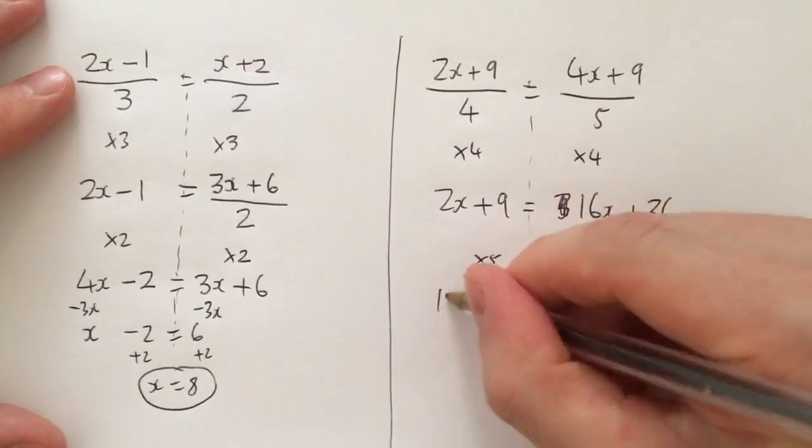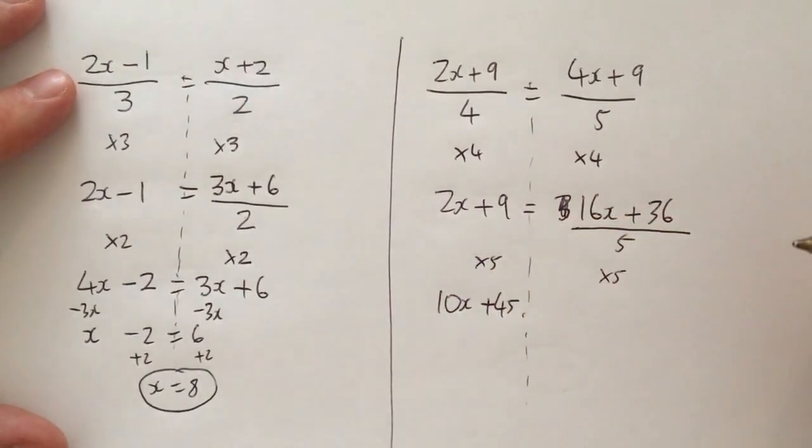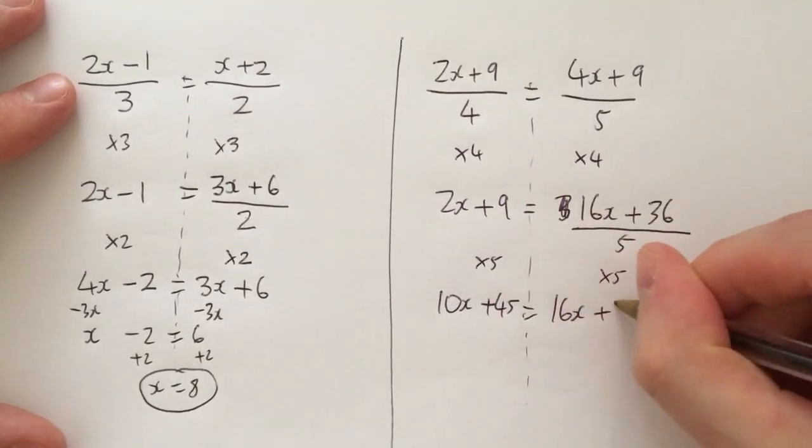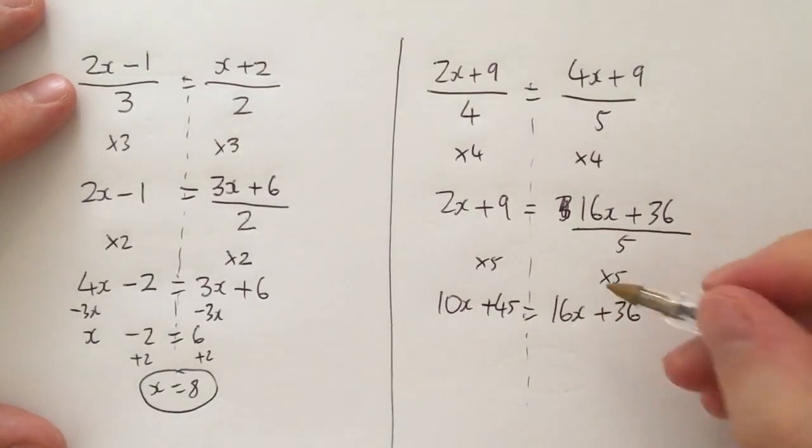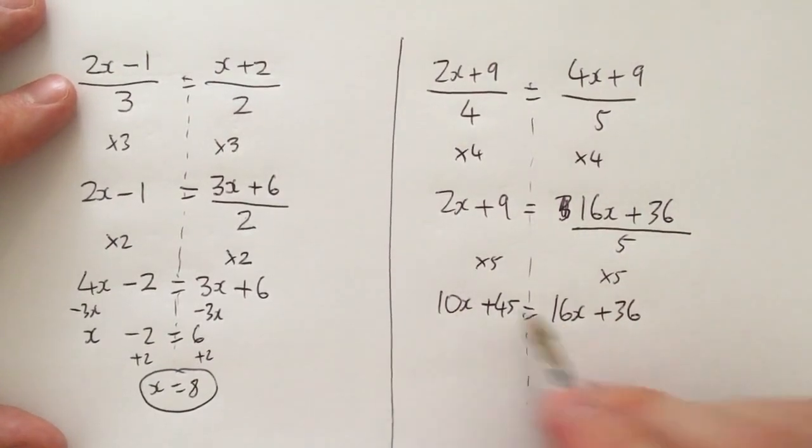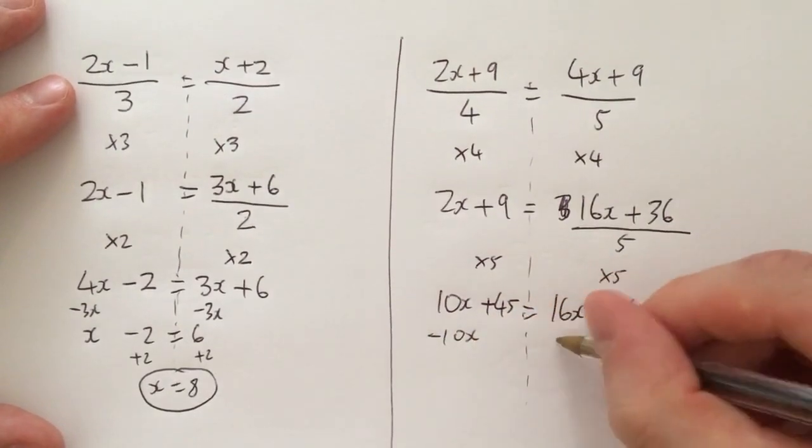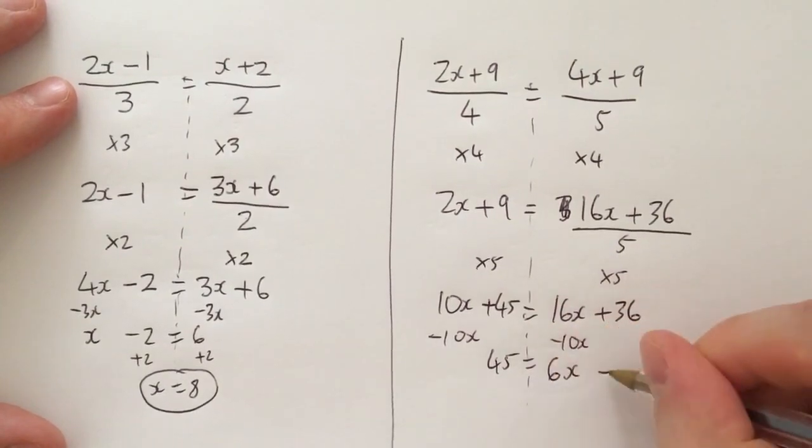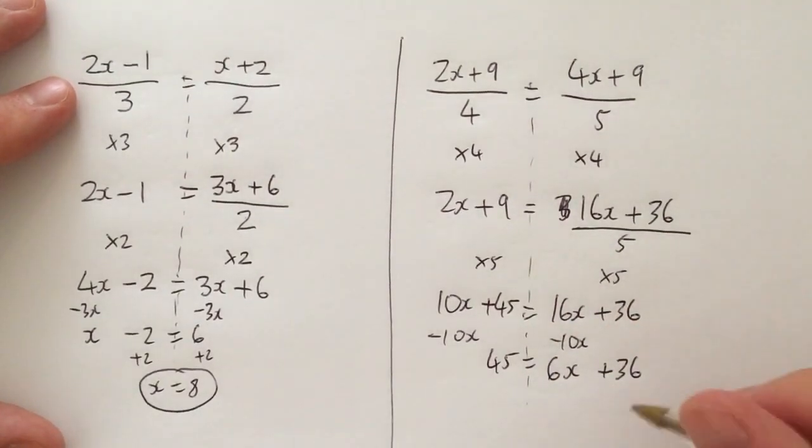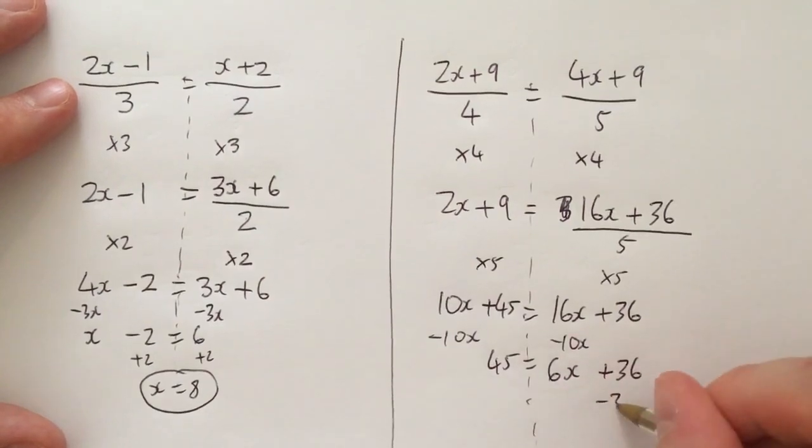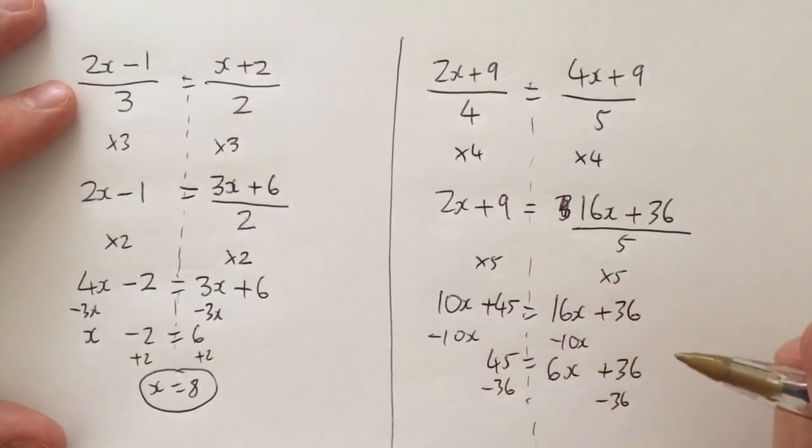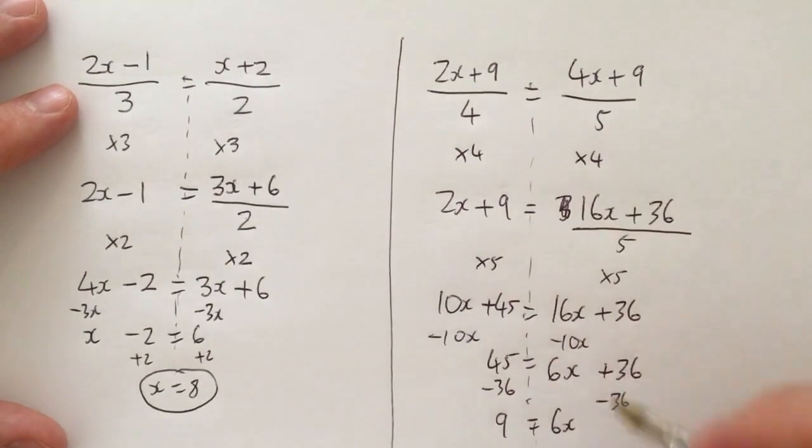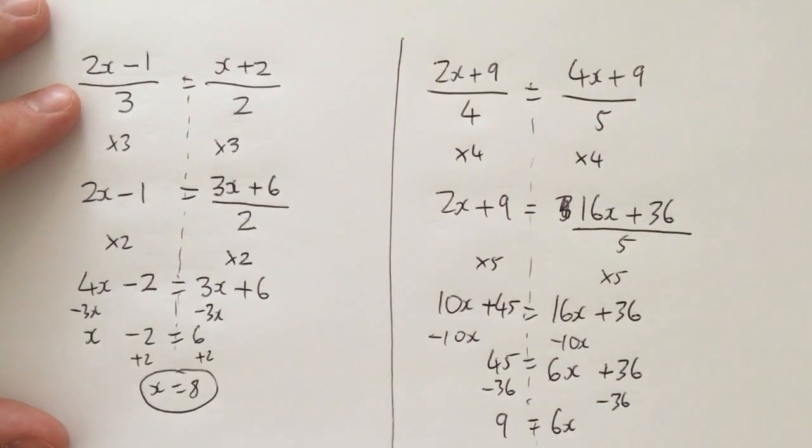That would be 10x plus 45 equals, divide by 5 times by 5 cancels out, 16x plus 36. Okay, then I just solve the equation, which the smaller coefficient the 10x, so minus 10x, minus 10x disappears, 45 equals 6x plus 36. Then I would minus 36, minus 36. I don't think this is going to be particularly nice, 9 equals 6x. I believe, unless I've done something weird with the maths here, but I believe that is absolutely correct.